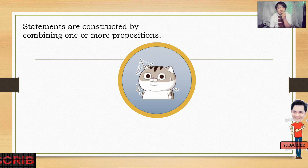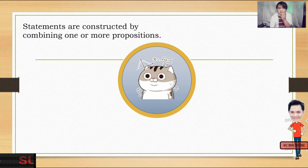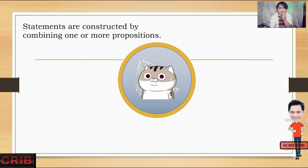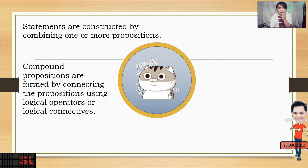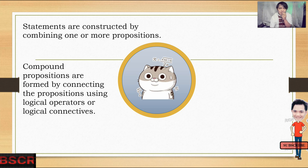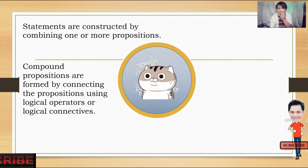Statements are constructed by combining one or more propositions. Just like in your English subject, you are combining two sentences to create another sentence or statement. Compound propositions are formed by connecting the propositions using logical operators or logical connectives.